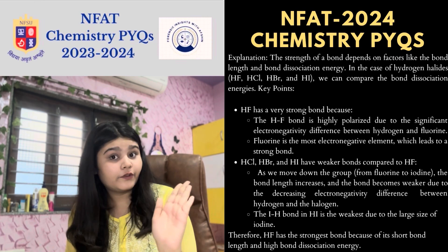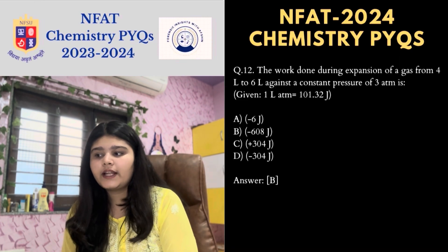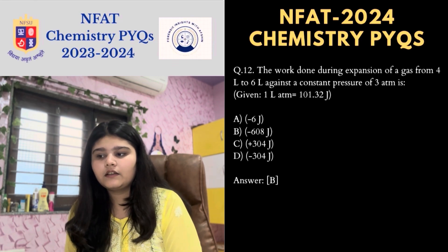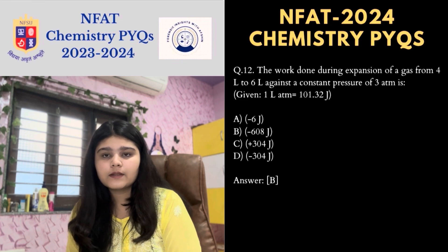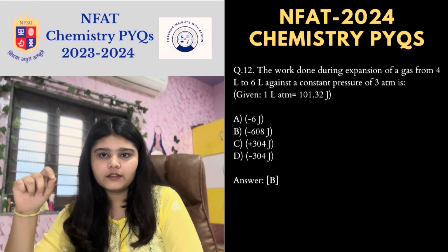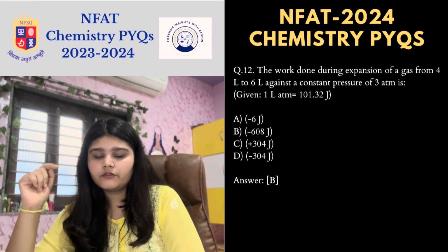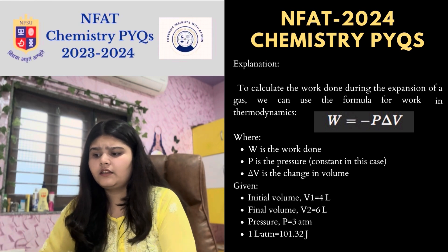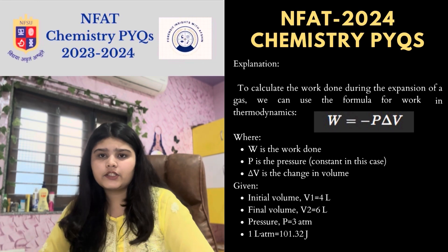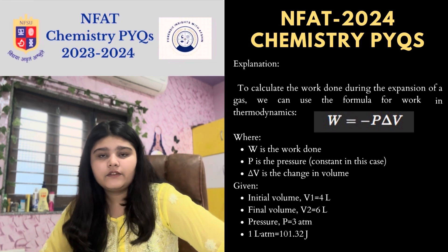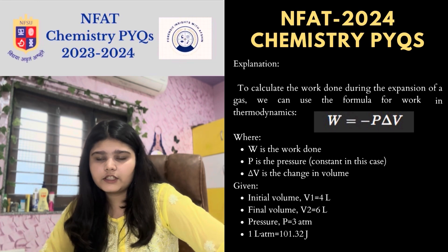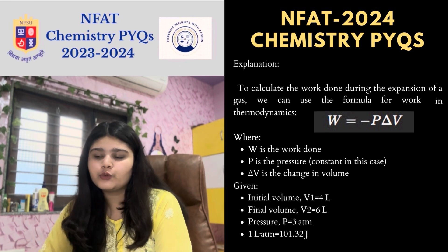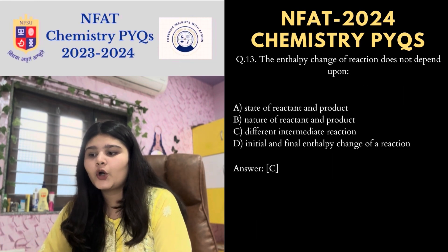Next MCQ: the work done during expansion of gas from 4L to 6L against a constant pressure of 3 atm, given that 1 L·atm = 101.32 joules. Write all given values, then use the work formula with initial volume 4L, final volume 6L, and pressure 3 atm. Substituting the values, you get the answer: minus 608 joules.